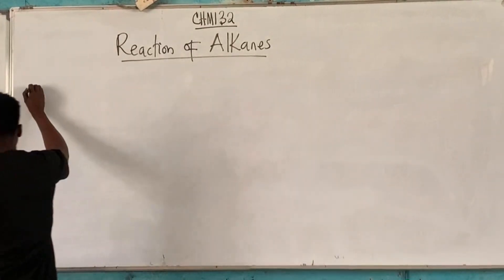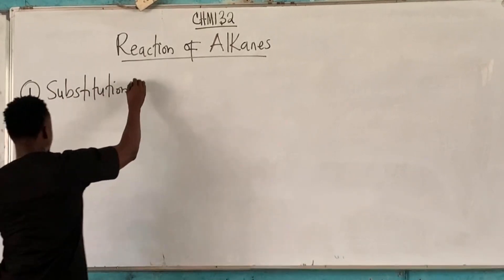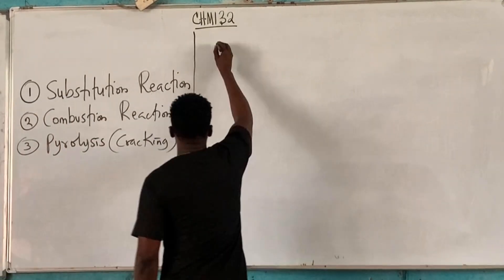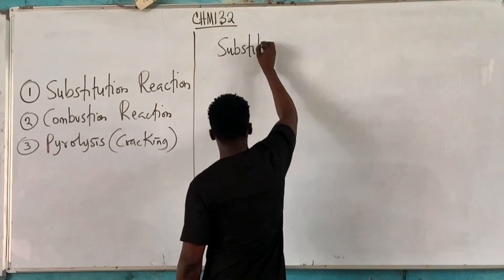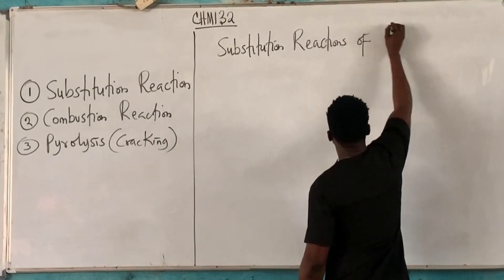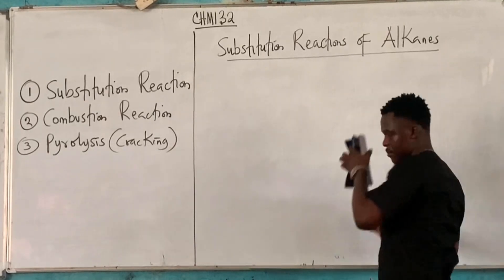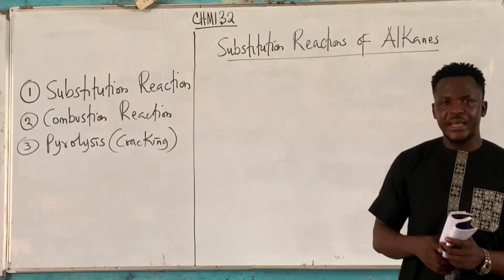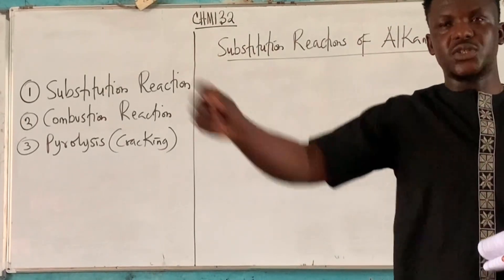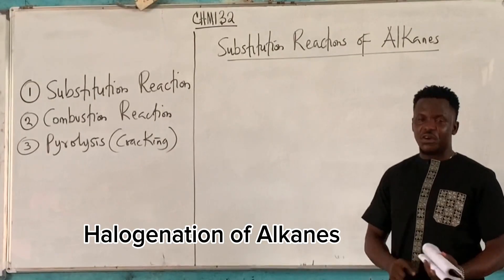Let's take a substitution reaction of alkanes. A substitution reaction is simply a case where an atom or group of atoms is replaced by another atom or group of atoms. The common substitution reaction that alkanes undergo is halogenation of alkanes.